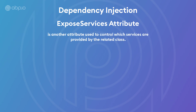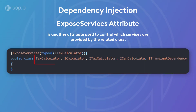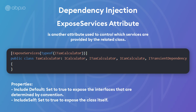The ExposedServices attribute controls which services are provided by the related class. For example, the TaxCalculator class only exposes the iTaxCalculator interface, so you can only inject iTaxCalculator — not TaxCalculator or iCalculator. It has two more properties: IncludeDefaults and IncludeSelf, which are both booleans. IncludeDefaults exposes the default interfaces determined by convention, while IncludeSelf exposes the class itself. The iCalculator and iTaxCalculator, and even the generic iCalculator interface, are considered default interfaces. However, iCanCalculate is not, since the naming convention is not satisfied.